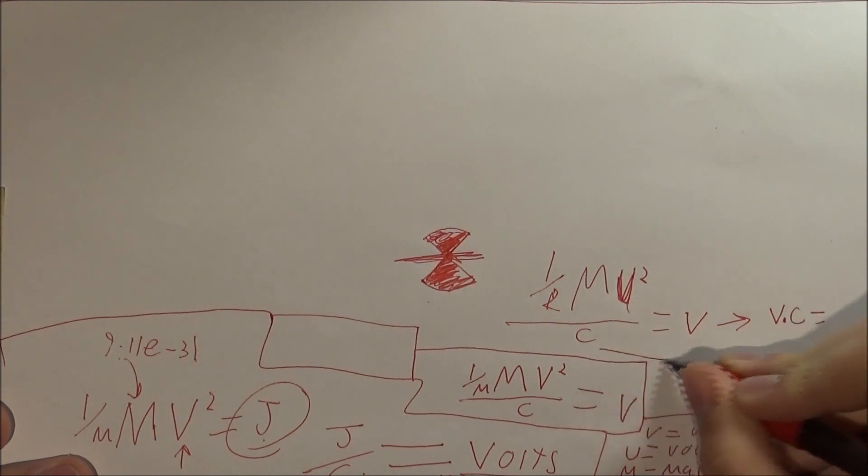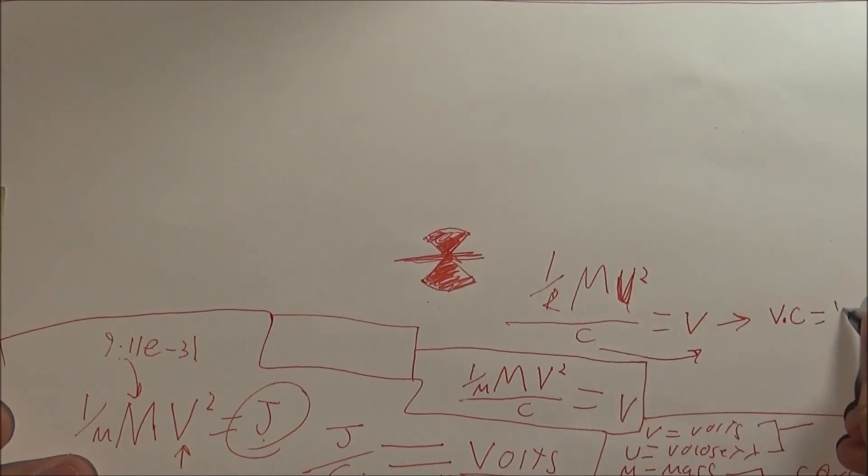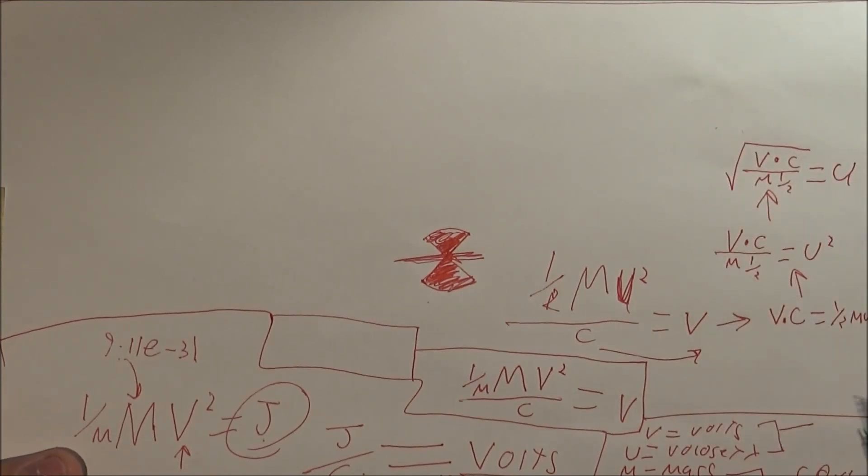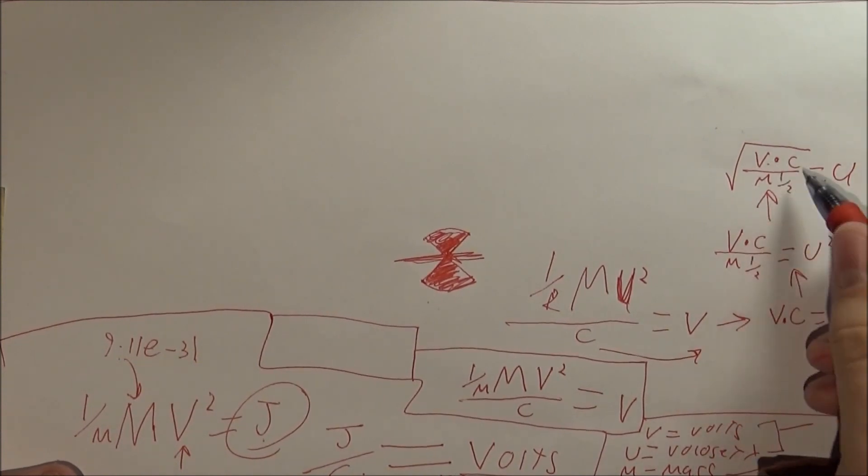Squared. And then so now all you need is the voltage, and then you can find the velocity of the electron.